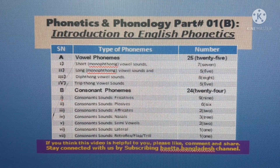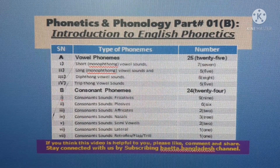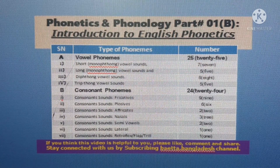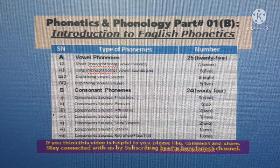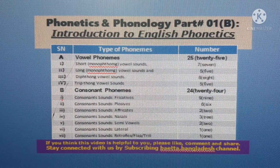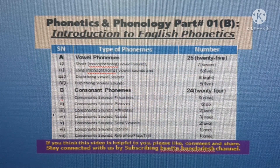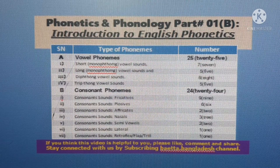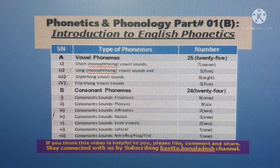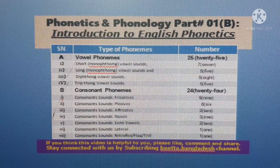Twenty-four consonant phonemes are classified into the following categories according to their places of articulation and functions of the vocal tract: fricatives, plosives, affricates, nasals, semivowels, laterals, and retroflex, flap, or trill.